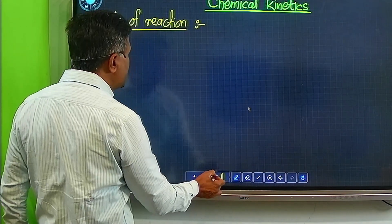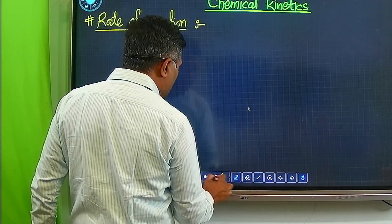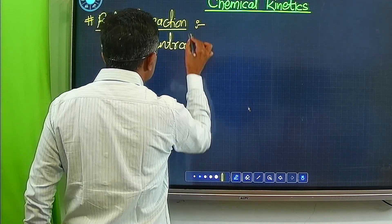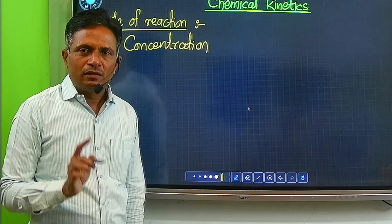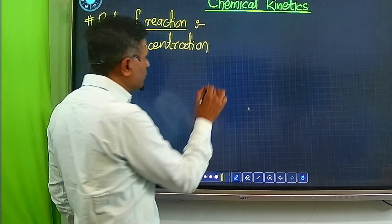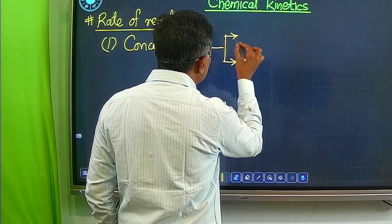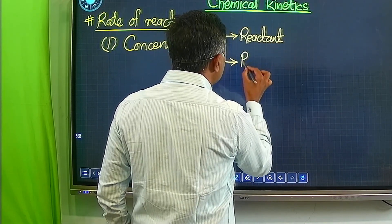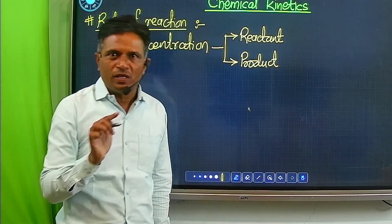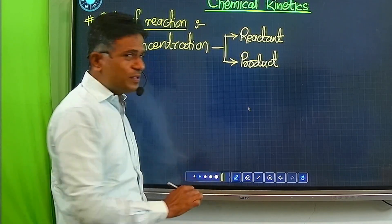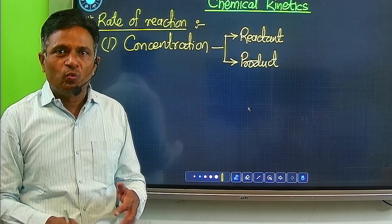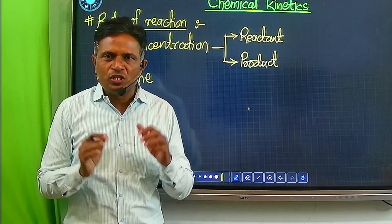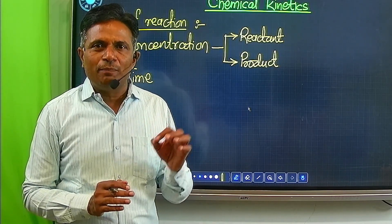The rate of chemical reaction depends upon two important factors. The first factor is concentration. The concentration of reactant is a very important part in deciding the rate of reaction. Here, both parameters — that means the concentration of reactant as well as the concentration of product — have to be considered, because both these concentration terms are going to change with time. And therefore the second parameter, which is also very important, is time. So these two parameters determine the rate of any particular reaction.